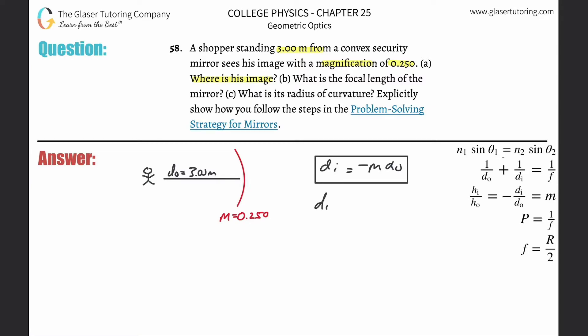So di is now going to be equal to negative magnification, 0.25, multiplied by the object distance of 3. So di here will be now equal to 0.25 times 3, and it's negative, so negative 0.75 meters or negative 75 centimeters. Now the negative sign here will tell us that the image, as I just mentioned, is behind the mirror.